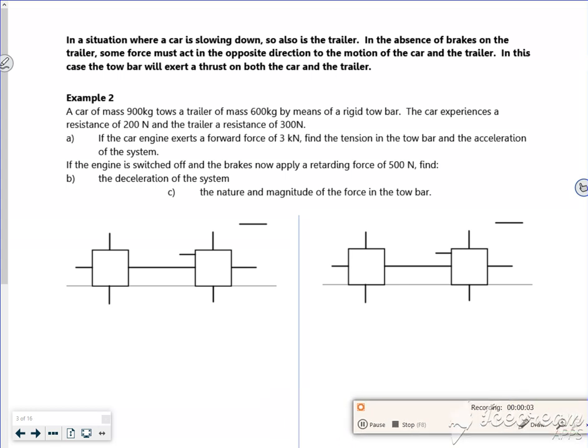Hello, right then. We've got another example now. It says in the situation where a car is slowing down, so is the trailer. Now they slow down at the same time. If the trailer has not got brakes on it, it says some force must act in the opposite direction.